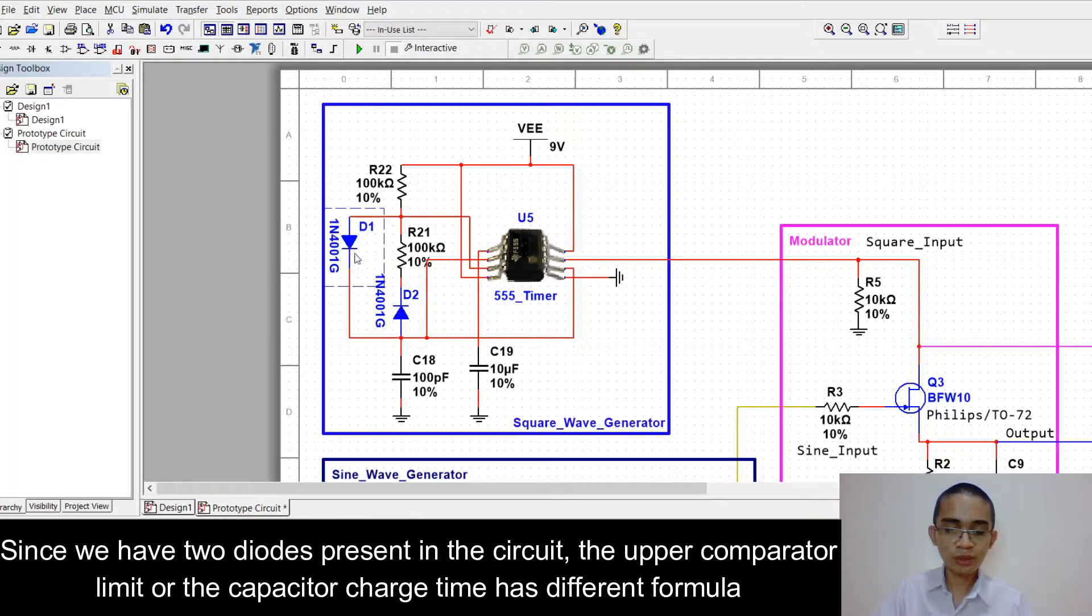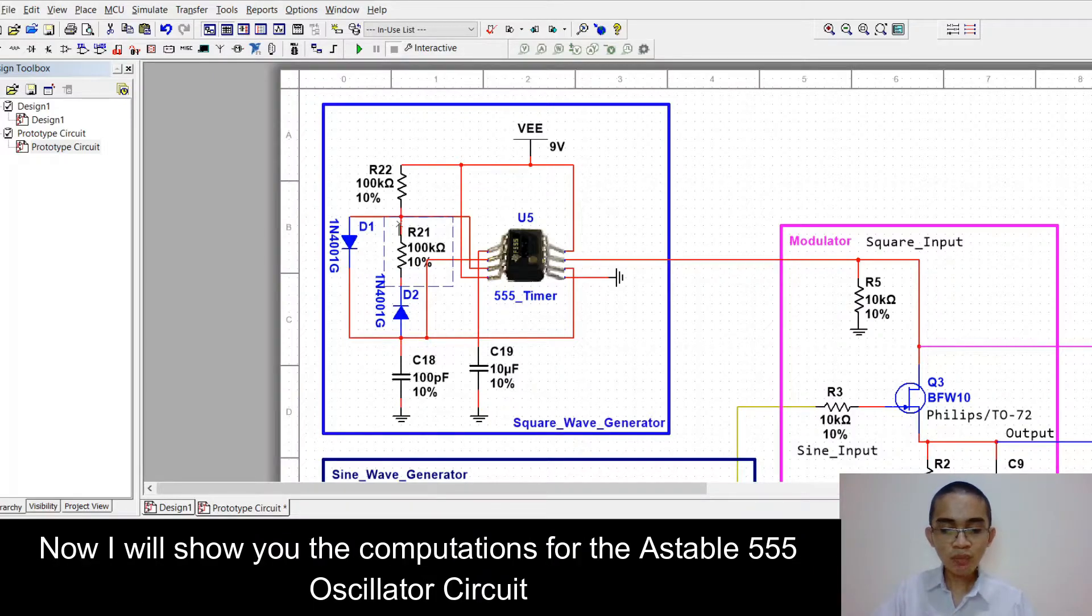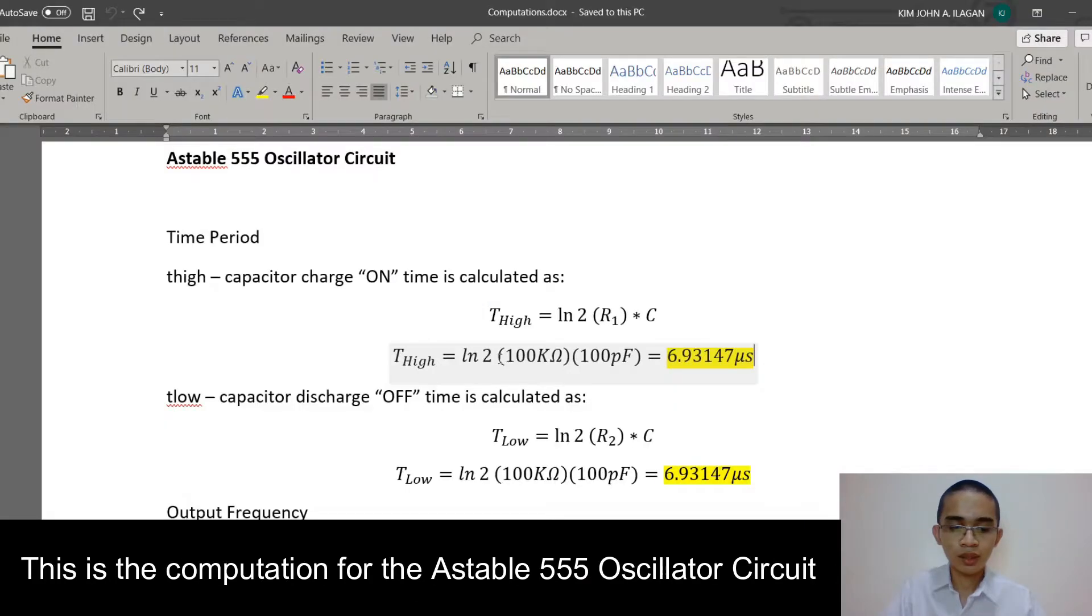Since we have two diodes present in the circuit, the upper comparator or the capacitor charge time has different formula. Now, I will show you the computation for the astable 555 oscillator circuit. This is the computation for the astable 555 oscillator circuit.